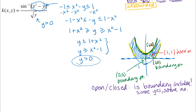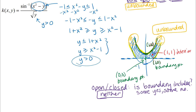Since some boundary points are included and some are not, this region is neither open nor closed. For bounded or unbounded, I think about the distances: the ends of the region go off to infinity along the parabolas, so I keep getting points farther and farther apart. Therefore this is an unbounded region — the distances do not stay finite. So this region is neither open nor closed, and unbounded.